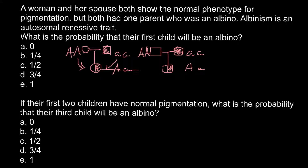Now, if these two people would mate, what is the probability that their child would also be affected with this genetic disorder — that is, have genotype small a, small a, or homozygous recessive? As you can see, we have the genotypes of both parents, and both of them are heterozygous.